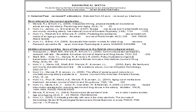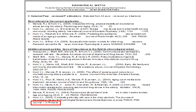Here is a biosketch. You can see PMC number three, the NIMS number four, and also in other places. And the last one: PMC journal in process. So this is what a biosketch has to look like, even if it's one of the faculty on a training grant.